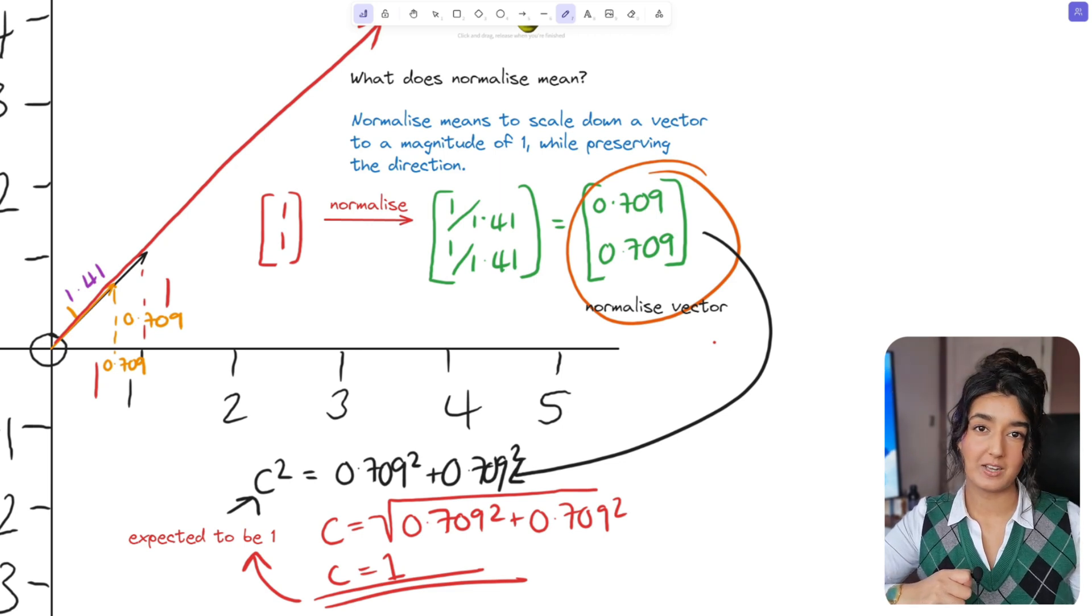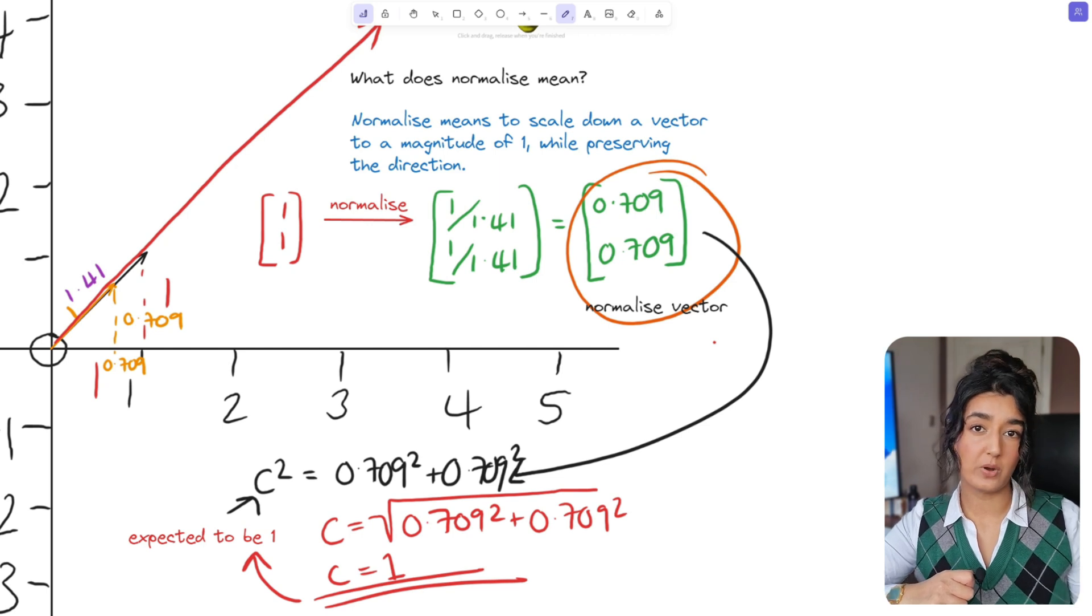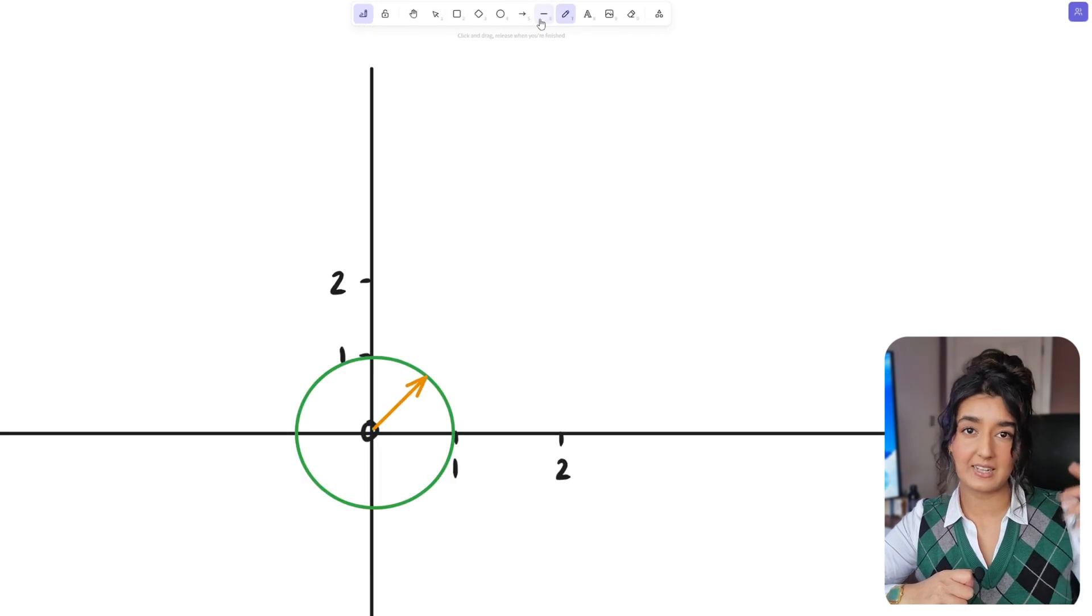This means now using the normalized vector if the player moves diagonally the magnitude of 1 is going to match if they only moved on the y axis by 1 or the x axis by 1.